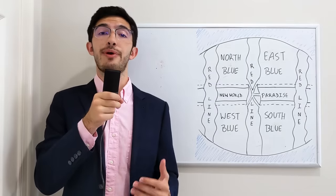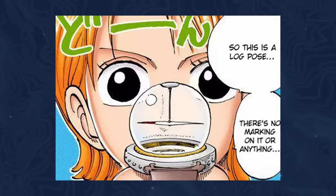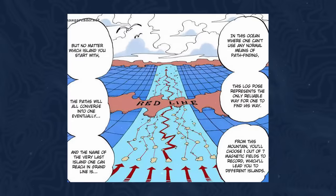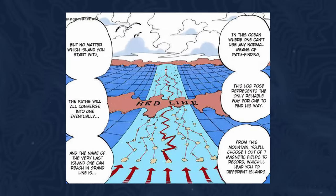Instead, a navigator in the Grand Line would have to use a log post that would point in the specific direction of a specific island as it tracks the magnetic fields of islands specifically rather than the magnetic north of the world more generally.